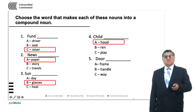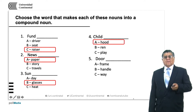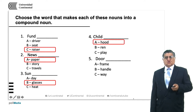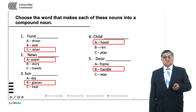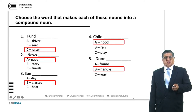Number five: door frame, door handle, doorway. Frame is something that encircles something. Handle is a device we use to open, close or manage. Way is a path. The answer is door handle — the part of the door we use to open, close and secure it. We also have door frame, but door handle is the most common answer.